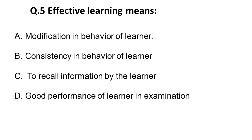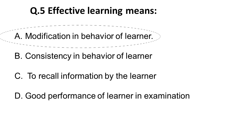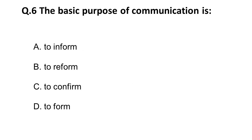The next question is: effective learning means what? Options are: A) modification in behavior of the learner, B) consistency in behavior of the learner, C) to recall information by the learner, D) good performance of the learner in the examination. The correct answer is A: modification in the behavior of the learner.